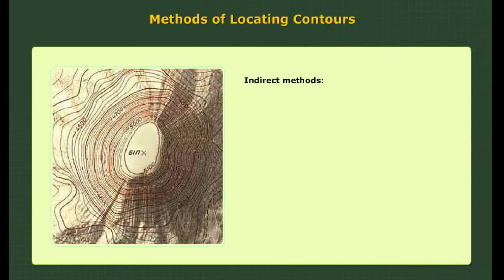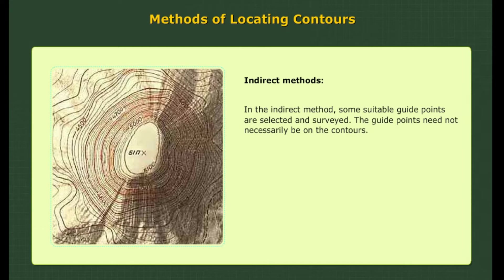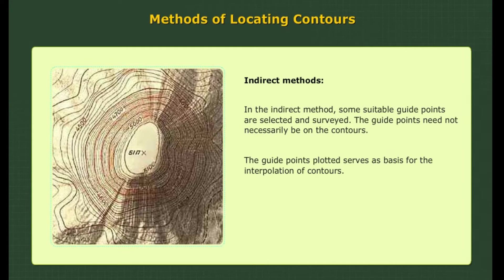Indirect method of locating contours. In the indirect method, some suitable guide points are selected and surveyed. The guide points need not necessarily be on the contours. The guide points plotted serve as a basis for the interpolation of contours. This is the method most commonly used in engineering surveys.